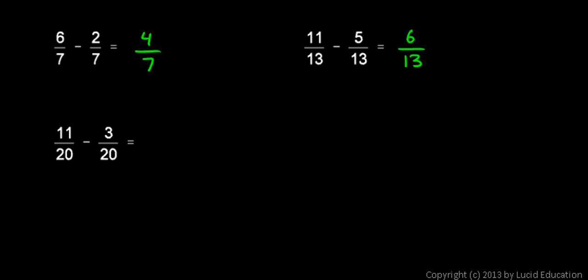Well, if we have eleven of these things and we subtract three of these things, that leaves us with eight of these things, in this case eight twentieths. Eleven twentieths minus three twentieths is eight twentieths.